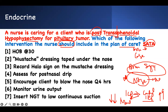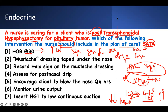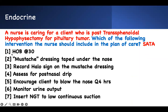Head of bed at 30 degrees — you do this all the time when somebody has high ICP. Don't put them supine; put them in 30-degree semi-Fowler's position to allow venous drainage. That's the key: venous drainage to decrease ICP.